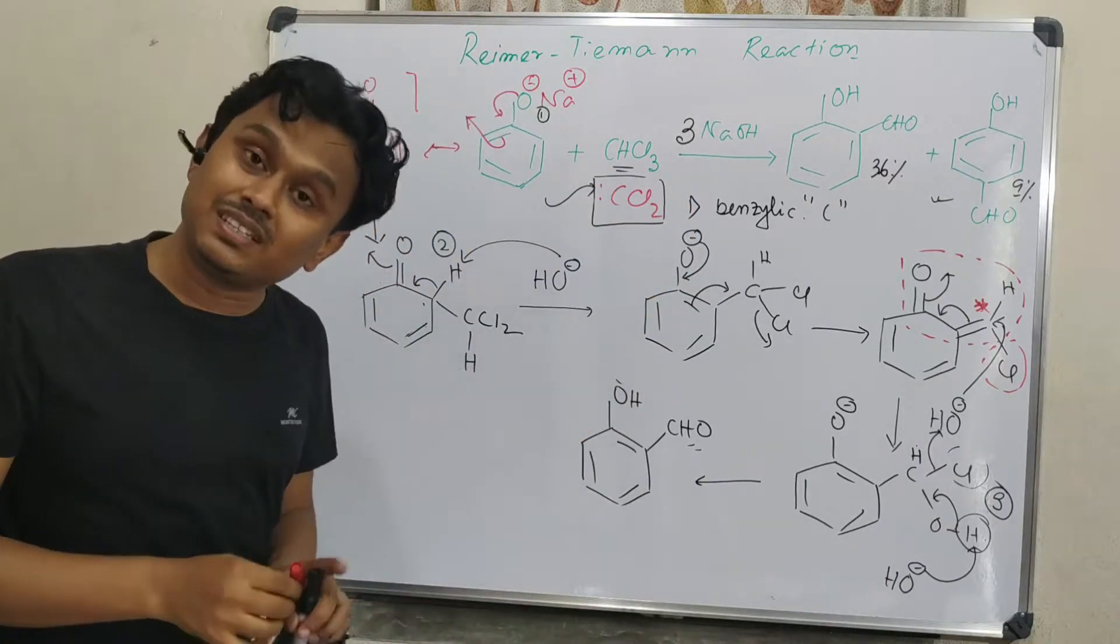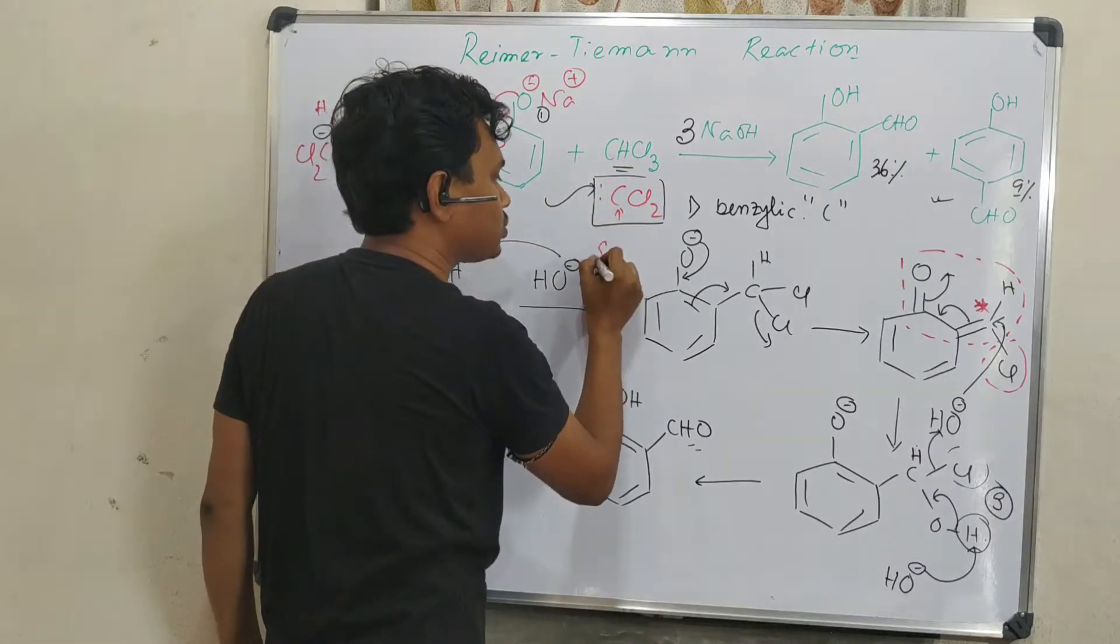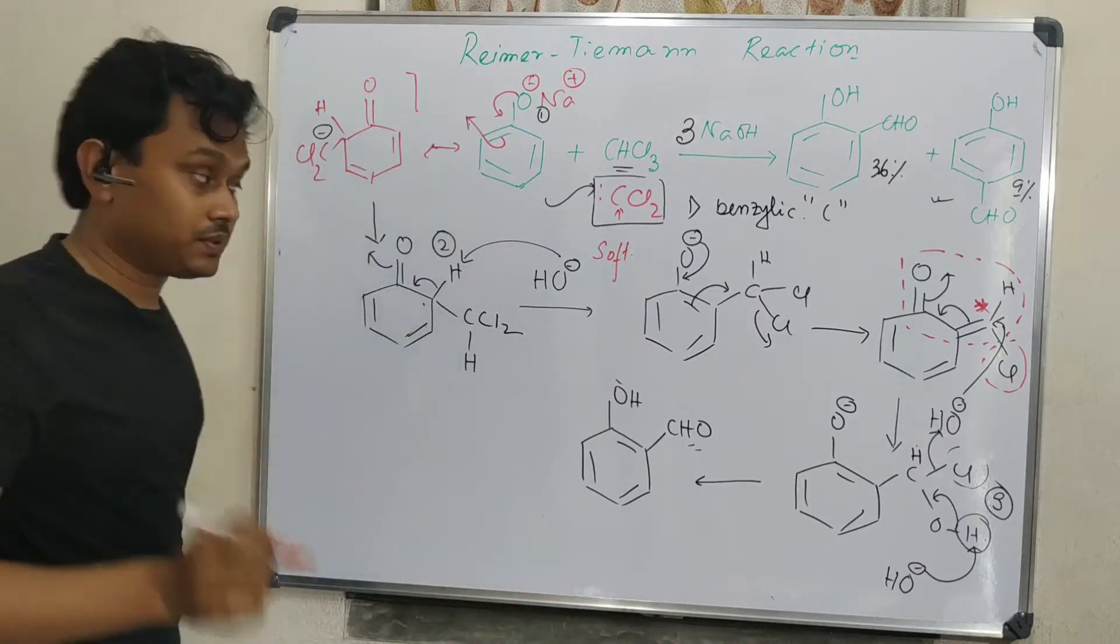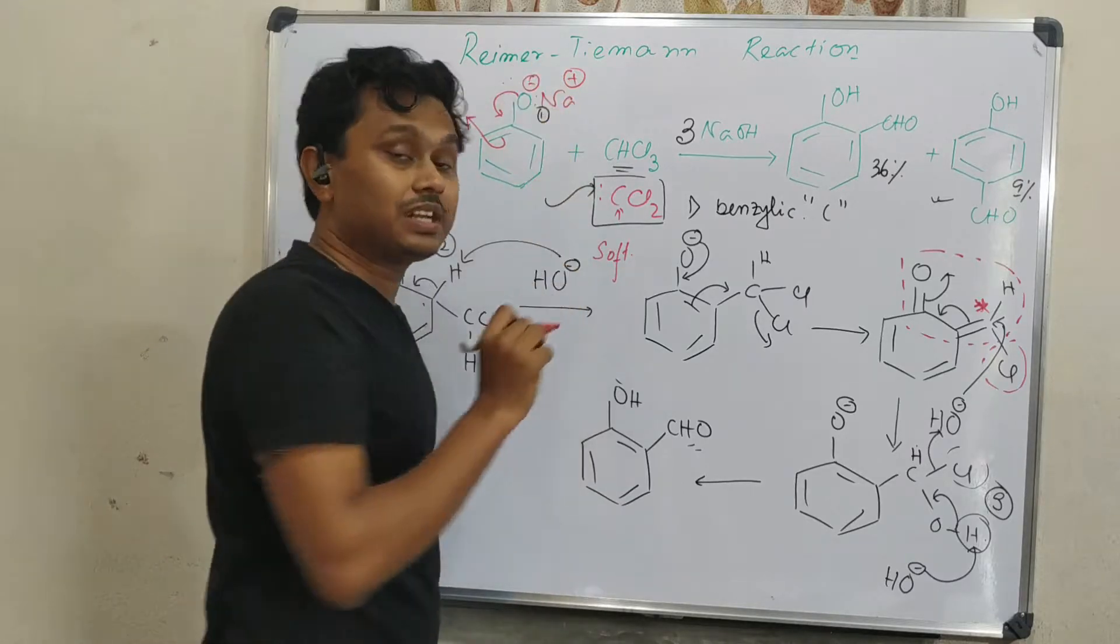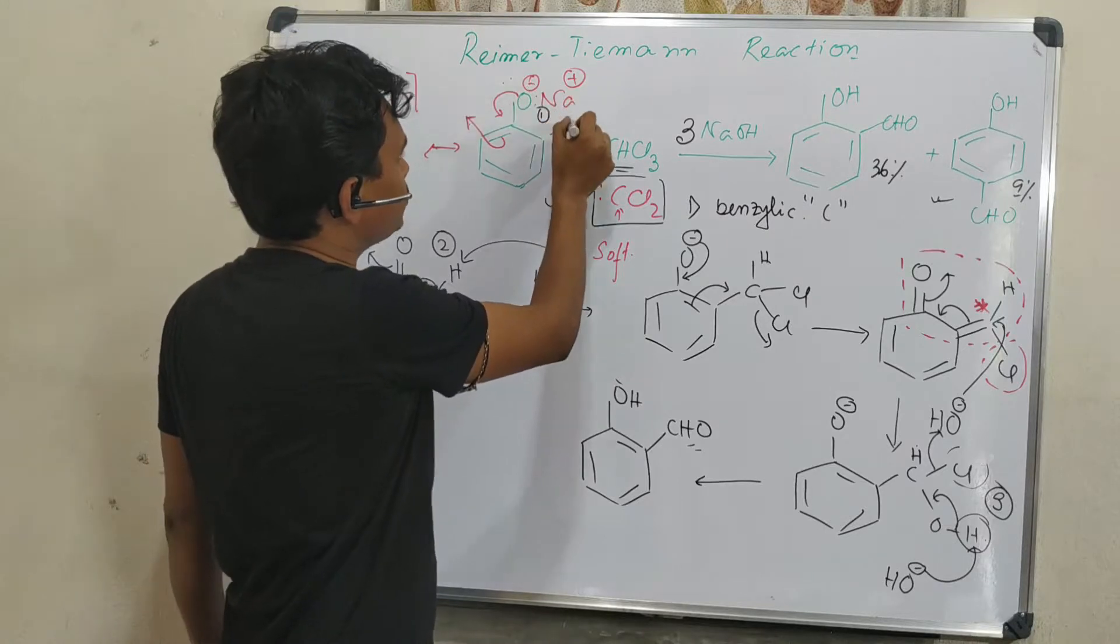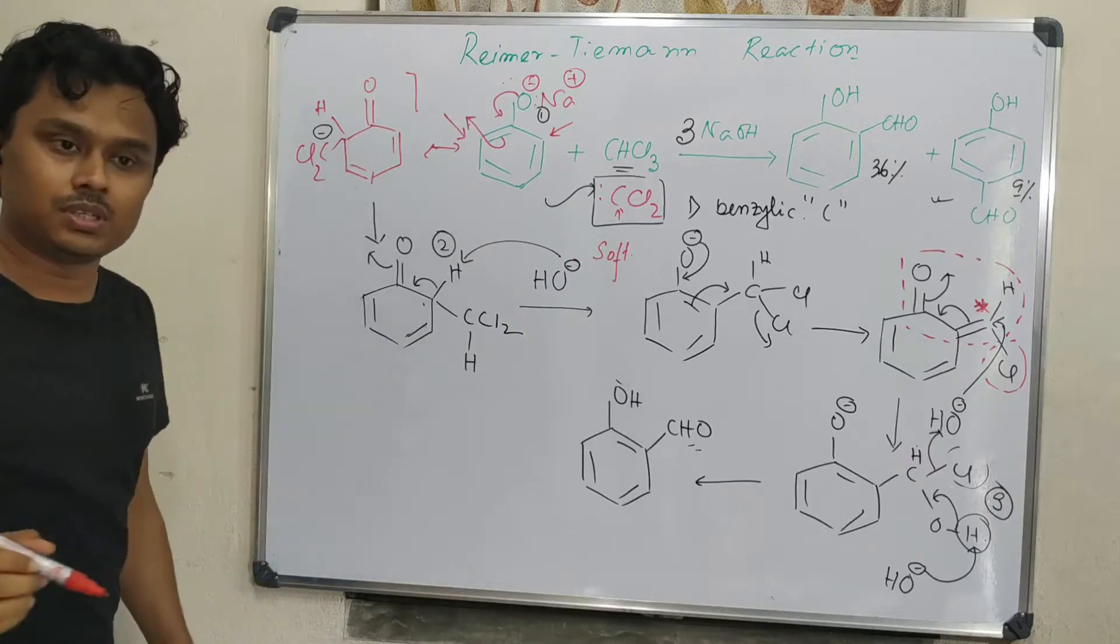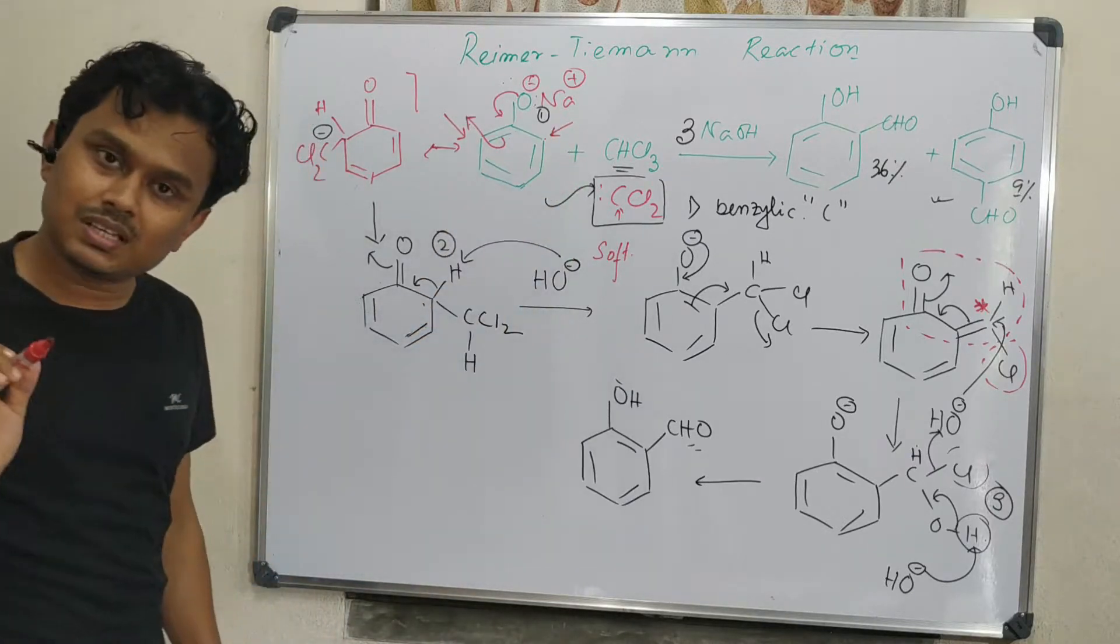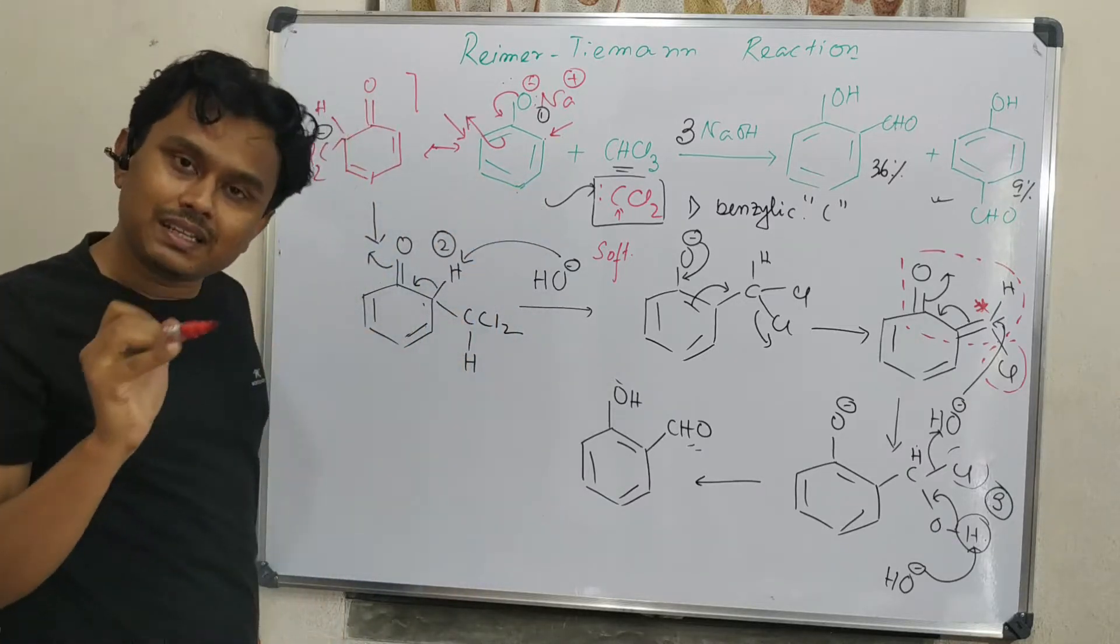It remains closer to this oxygen. So consequently, this ortho position is closer to the dichlorocarbene and gets attached to it. And there is also possibility for para, but that is relatively less compared to ortho attack.